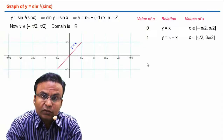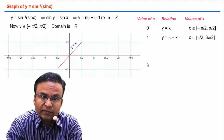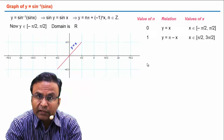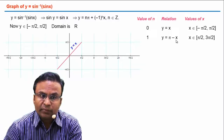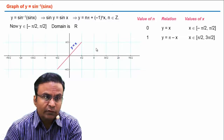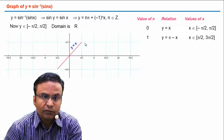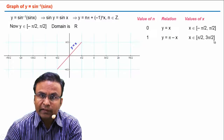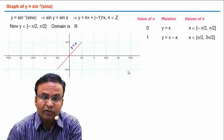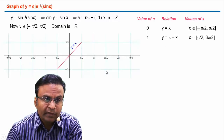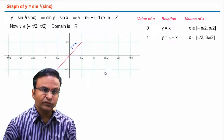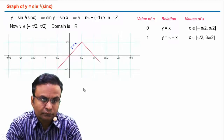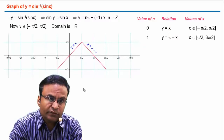So we draw the graph of y = π - x for x ∈ [π/2, 3π/2], which is a straight line with slope -1. At x = π/2, y = π/2, giving the point (π/2, π/2). At x = 3π/2, y = -π/2, giving the point (3π/2, -π/2). This segment is the graph for n = 1.